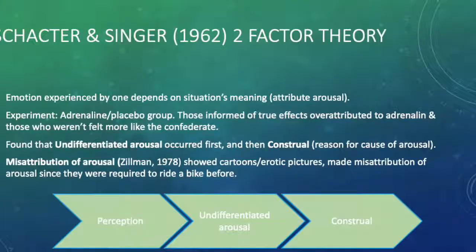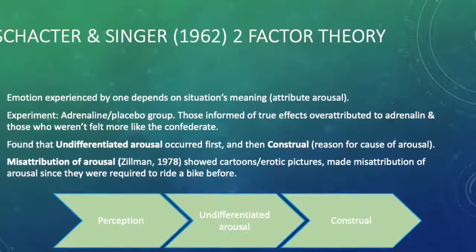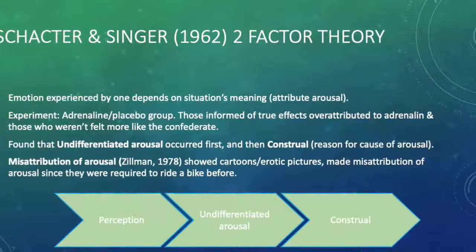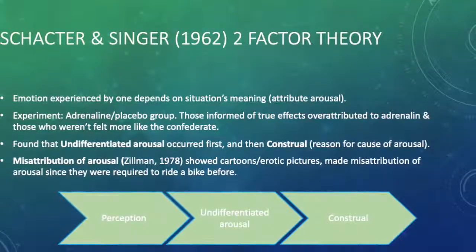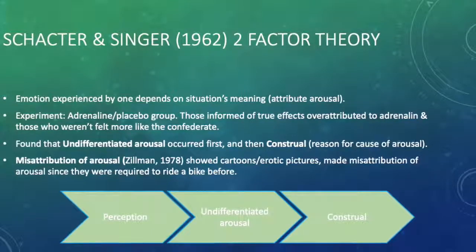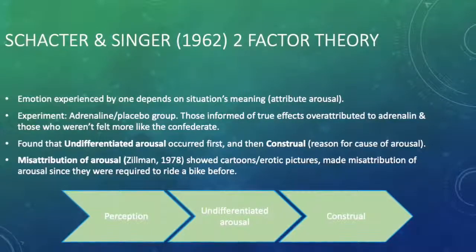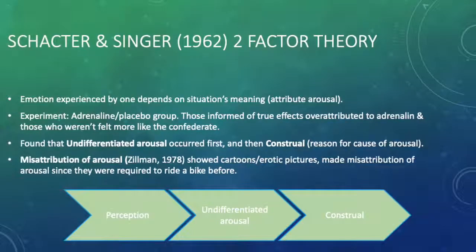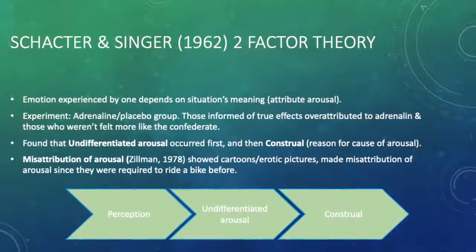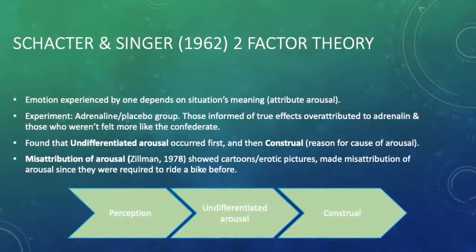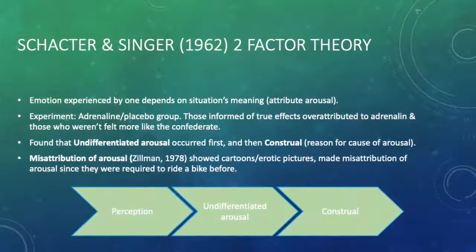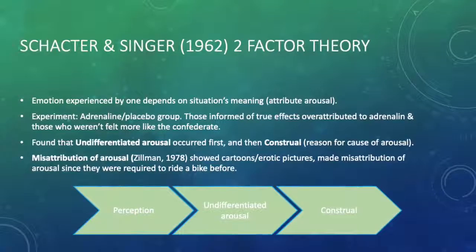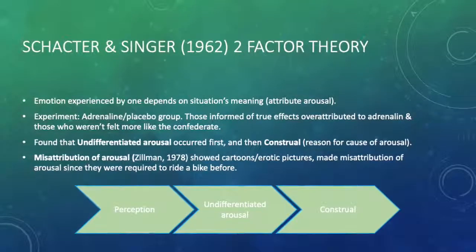Schachter and Singer in 1962 postulated the two-factor theory model, in which emotions experienced by one depends on a situation's meaning or the attributed arousal. In the experiment, individuals were placed in an adrenaline or placebo group. Some participants were informed of the true effects of adrenaline and thus over-attributed to adrenaline, while others who were not informed did not over-attribute and thus felt more like the confederates. This found that undifferentiated arousal occurred first, and then a construal was developed later through post-hoc reasoning — reasoning for the cause of the arousal.